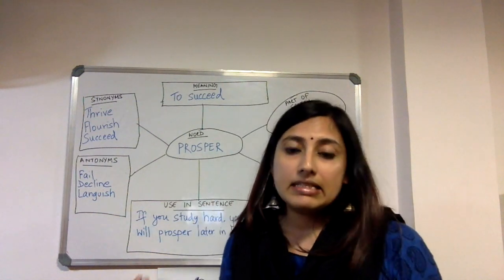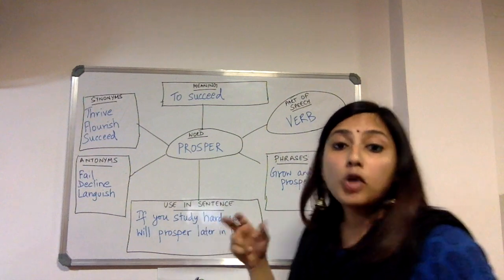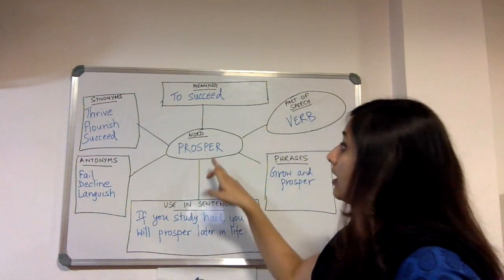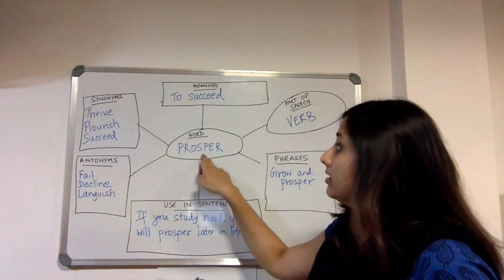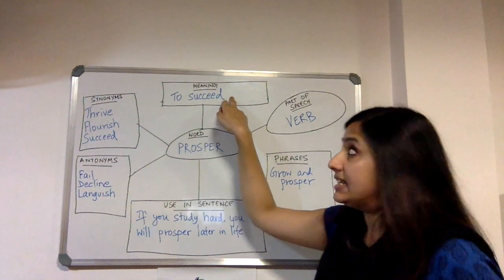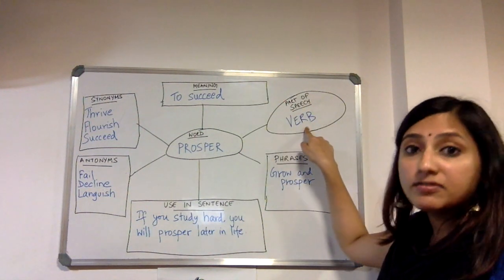So here I have completed a word web for the word prosper. So prosper is the word that we're trying to teach the meaning of to our students. So you write your target word in the central circle prosper. What is the meaning of prosper? It means to succeed. What part of speech does this word belong to? It is a verb.